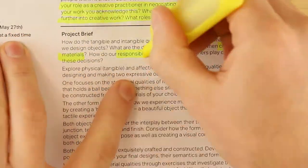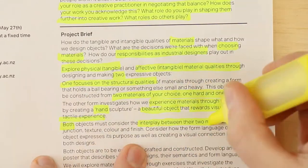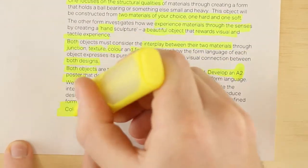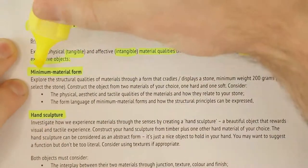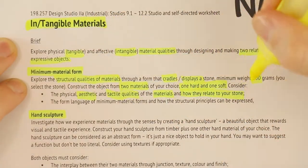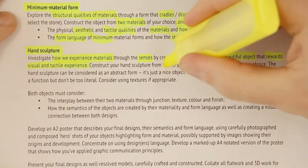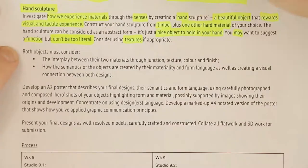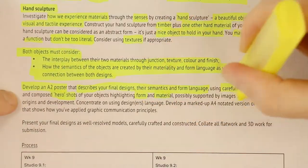The briefs are often written to be quite open, but still ask for quite specific things. You can see here as I'm going through, I'm highlighting key words, important facts, requirements of the brief, measurements and weights, how much of the materials to be used, and special considerations such as function, textures, and what it actually looks like.